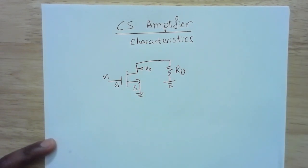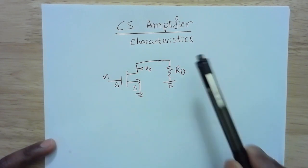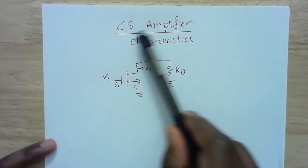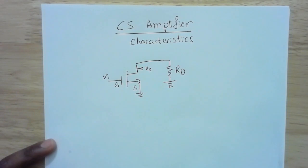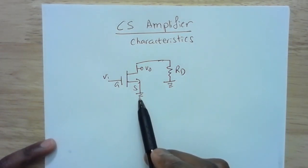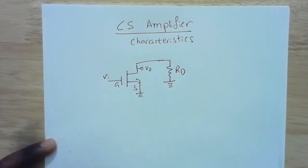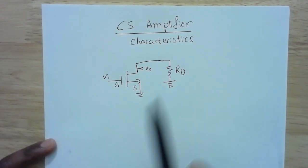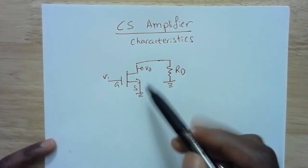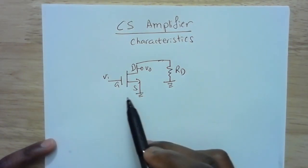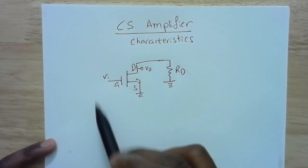In this video we're going to look at characteristics of the CS amplifier, which is the common source amplifier. Common source amplifier means that the source is grounded, the input is applied between the gate and the source, and the output is measured between the drain and the source. Notice that there are no power supplies in the circuit.